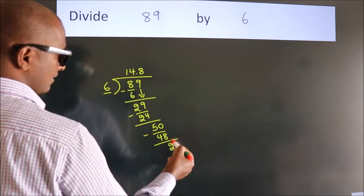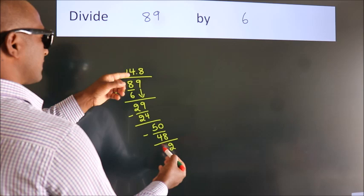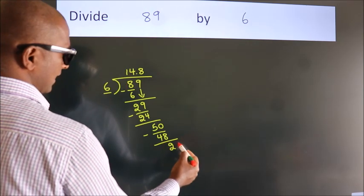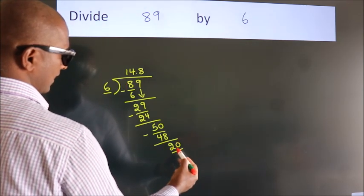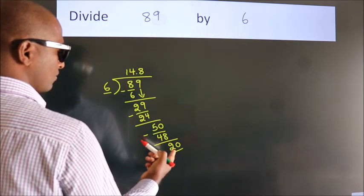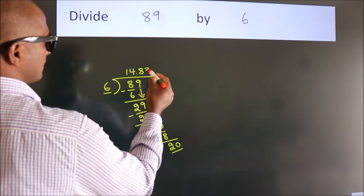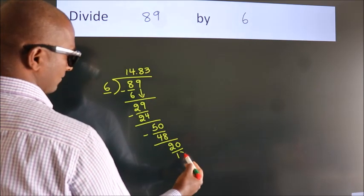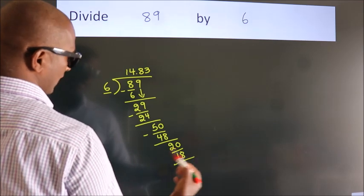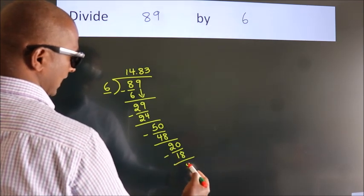After this, we already have the decimal, so directly take 0. That's 20. A number close to 20 in the 6 table is 6 times 3 equals 18. Now we subtract and get 2.